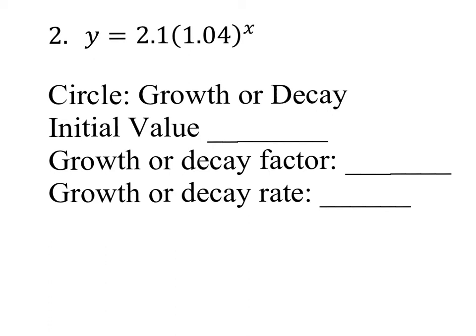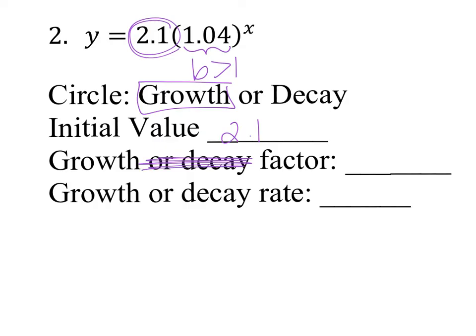For number 2, is it growth or decay? Well, b is 1.04 — is b bigger than 1 or between 0 and 1? It's 1.04, so b is bigger than 1, so it is growth. My initial value is what comes in front, so it's going to be 2.1. My growth factor, because it's not decay, is whatever b is, and b equals 1.04.